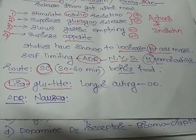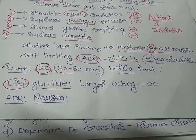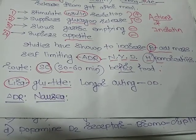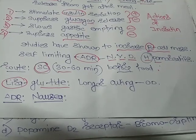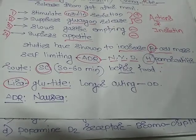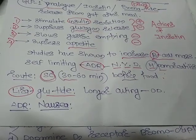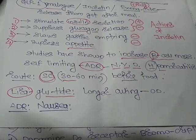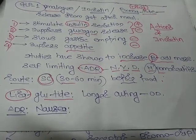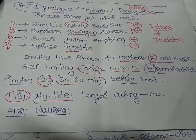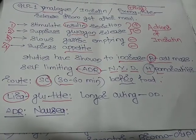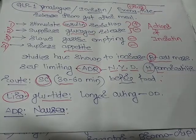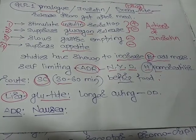Studies have also shown that incretin increases the beta cell mass, which means more and more insulin will be released from the beta cells. So this GLP-1 analog — exenatide — is nothing but a synthetic analog of incretin or synthetic analog of GLP-1.